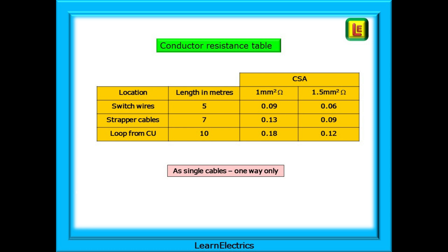If we put the lengths and resistance into a table, this is what we'll have in ohms. We've said that in this video the lengths of the cables will be as follows: the switch wires from the ceiling rows to the switch will be five meters, the length of the strapper cables in the two-way circuit will be seven meters between switches, and the line and neutral loop cable from the consumer unit to the ceiling rows is 10 meters. It's then very easy to calculate the resistance of each conductor as shown.